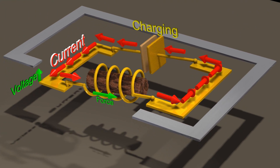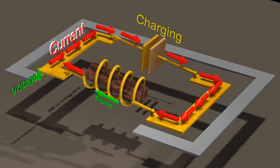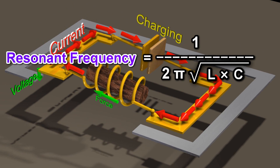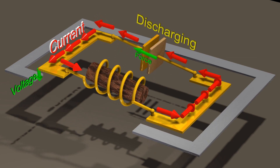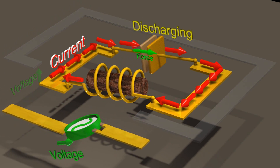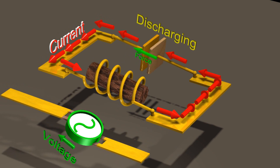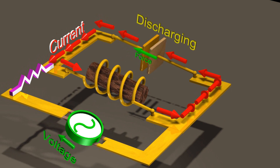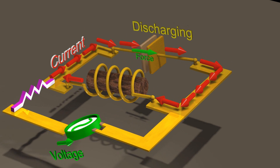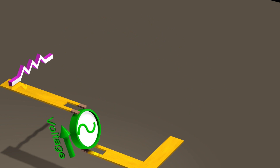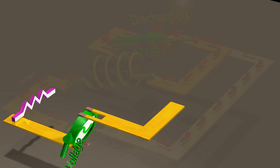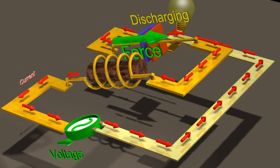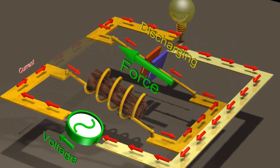Suppose we connect an inductor to a capacitor. The current and voltage will oscillate at a resonant frequency that is determined by the values of the inductance and capacitance. If this capacitor and inductor are connected in parallel with an AC voltage source with this exact same resonant frequency, then from the perspective of the AC voltage source, the capacitor and inductor parallel combination will behave like an open circuit. On the other hand, if this capacitor and inductor are connected in series with an AC voltage source with this exact same resonant frequency, then from the perspective of the AC voltage source, the capacitor and inductor series combination will behave like a short circuit.